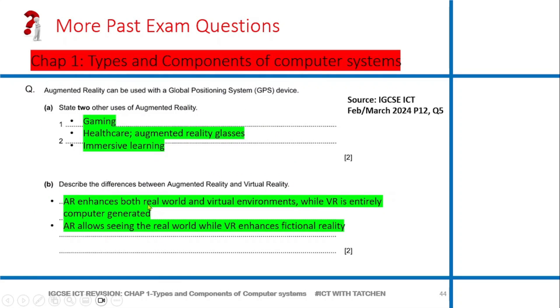The 2024 question: state two other uses of augmented reality. Augmented reality can be used with a global positioning system (GPS) device. Everybody uses GPS somehow - once you have a smartphone, there's GPS in it. State two other uses of augmented reality: people use it for gaming, healthcare, mental reality glasses, immersive learning - people can use that for learning. Describe the differences between augmented reality and virtual reality. We've looked at this question in the exam-style question, so you should be able to answer this.